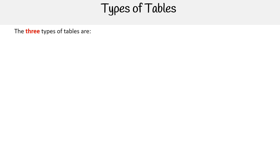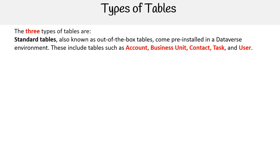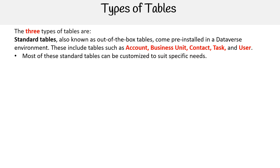The three types of tables are: standard tables, also known as out-of-the-box tables, which come pre-installed in a Dataverse environment. These include tables such as account, business unit, contact, task, and user. Most of these standard tables can be customized to suit specific needs.